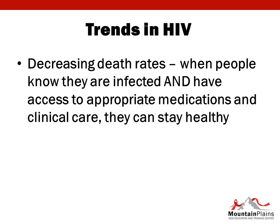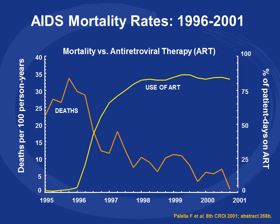The next trend I'd like to talk about is decreasing death rates. This has happened over the years and is related to access to testing and appropriate services. The primary reason that the death rates are dropping is because we have developed newer and better ways of treating the disease. Antiretroviral therapy has shown a great increase not only in the number of drugs, but also in the efficacy of those drugs over time. This graph shows that the higher the use of antiretroviral therapy, the lower the death rate.